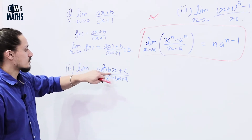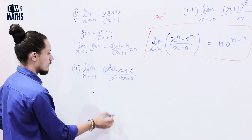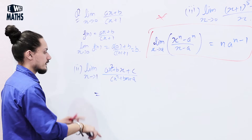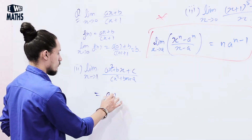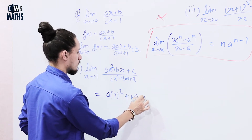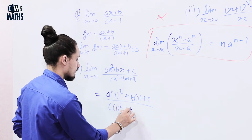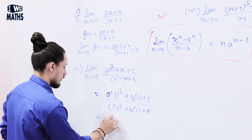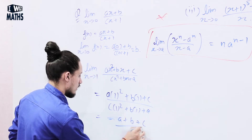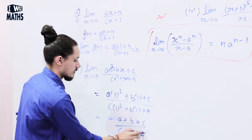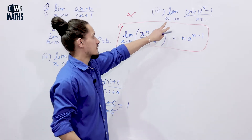Next: lim (x → 1) of (ax² + bx + c) / (cx² + bx + a). This is f(x), so the limit = (a×1² + b×1 + c) / (c×1² + b×1 + a) = (a + b + c) / (c + b + a), which cancels out to equal 1.